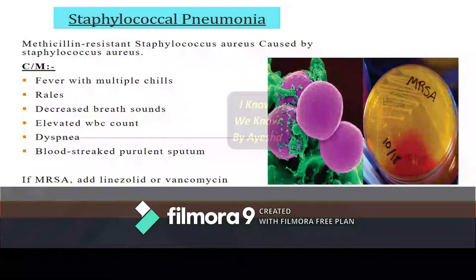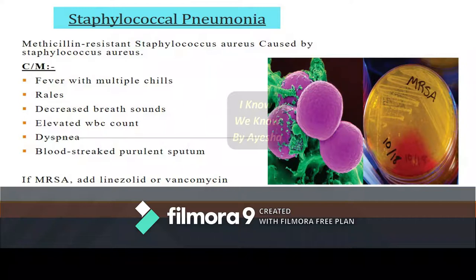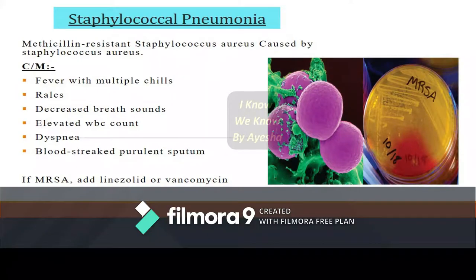Staphylococcal pneumonia is mainly caused by Staphylococcus aureus, including methicillin-resistant Staphylococcus aureus, commonly known as MRSA. Clinical manifestations include fever with multiple chills, rales, decreased breath sounds, elevated WBC count, dyspnea, and blood-streaked purulent sputum. In case the patient has MRSA, linezolid or vancomycin will be added to the treatment.